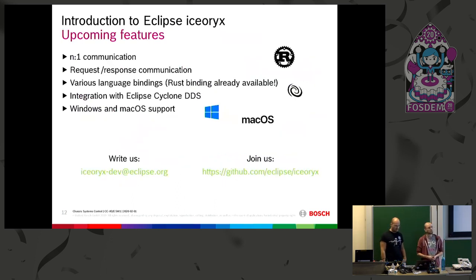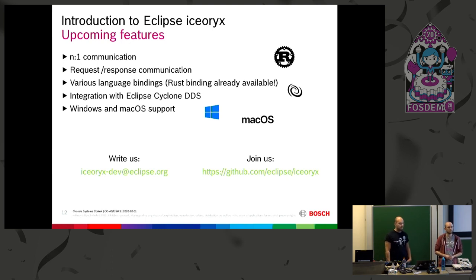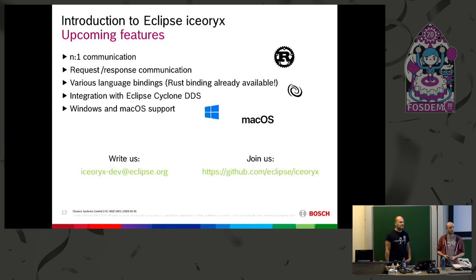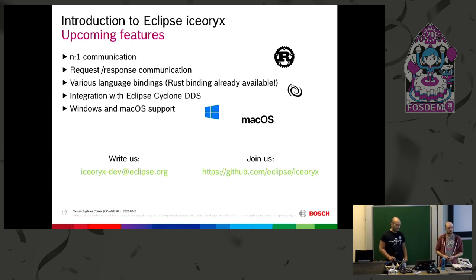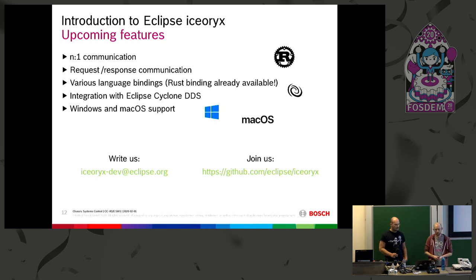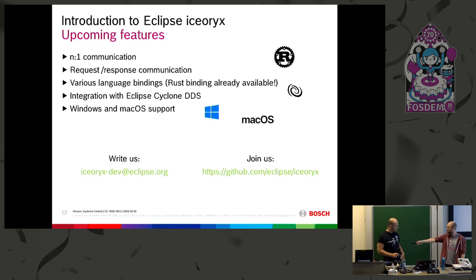Some words about upcoming features: we're planning to integrate one-to-many communication, which is necessary for the ROS 2 logger where many publishers send data to one topic. We're also planning request-response communication and various language bindings — the Rust binding is already available. We're also partnering with Eclipse Cyclone DDS, the middleware currently used inside ROS 2, and for full ROS 2 compatibility we're planning Windows and macOS support. If you have further questions, you can write to our mailing list or check out the code.